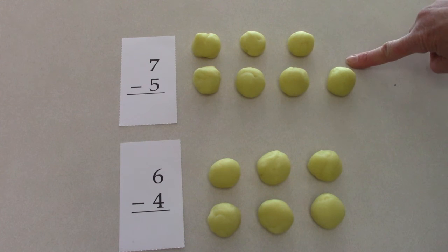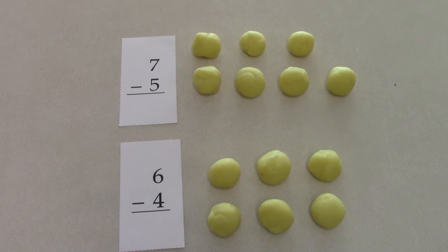Do you see here on the top? I have seven take away five, and I made seven little balls of play-doh. And then on the bottom, I have six take away four, and there are six little balls of play-doh. Well, on the top, I am going to take away five from seven.